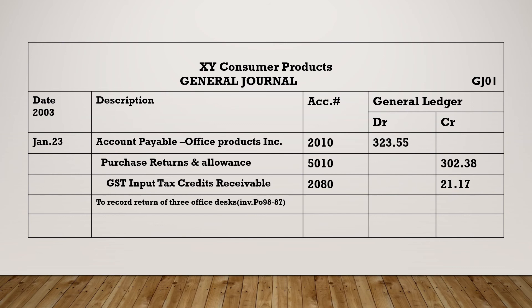Accounts payable will be debited $323.55 because this liability has decreased — you are not supposed to pay it again since you are returning the items, and when a liability decreases you debit it. Then you credit Purchase Returns and Allowances (account 5010) for $302.38, because you are returning the items and they are no longer part of your assets — when assets decrease, you credit them. You also record the GST input tax credit of $21.17.